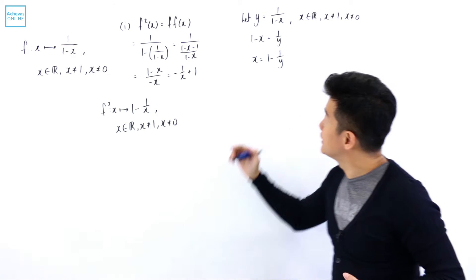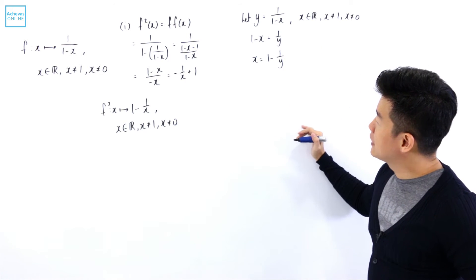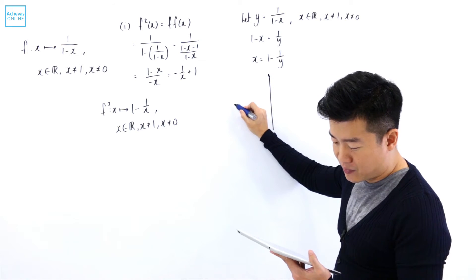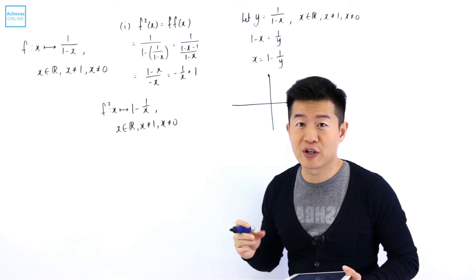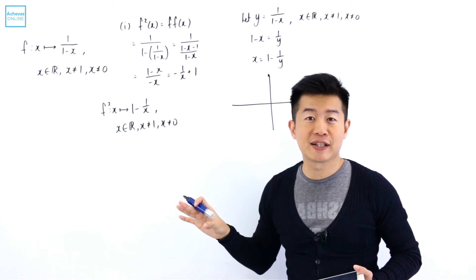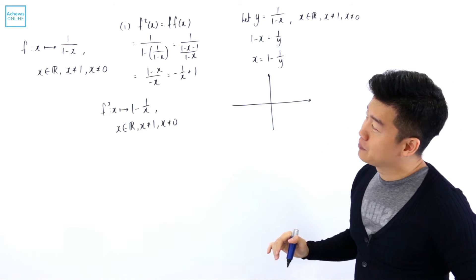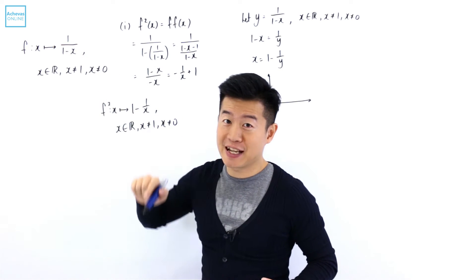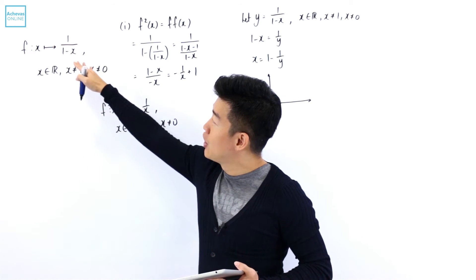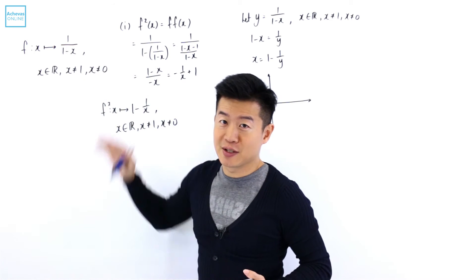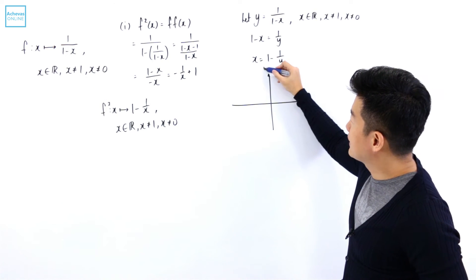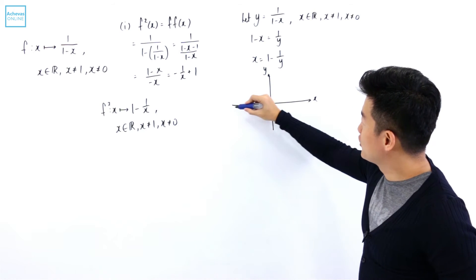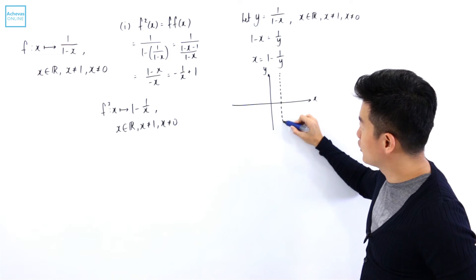The next thing to look at is the domain of f⁻¹. For the f⁻¹ domain, we look at the graph of f(x). It is a rational function — not a bad graph to draw. It has a horizontal asymptote of y = 0 and a vertical asymptote of x = 1, so the x-axis and the line x = 1 form the asymptotes.